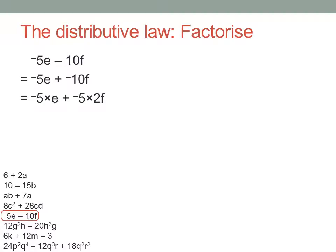So in fact, negative 5 is my common factor. So take it outside brackets. Negative 5 times e plus 2f. If you want to check this answer, again try expanding those brackets. Negative 5e plus negative 10f. And plus negative 10f is the same as minus 10f.